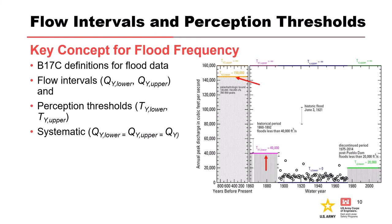Here is a perception threshold diagram showing the gray area for the threshold and the interval data shown with a flow range. There are three different perception thresholds for this analysis — one for the modern time period, one for historical, and one for paleo flood — along with four flow intervals shown as well.